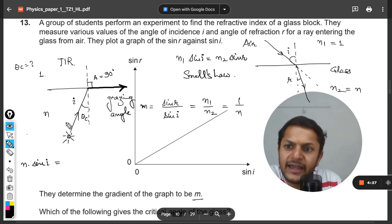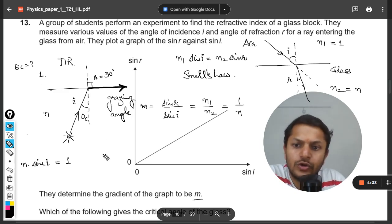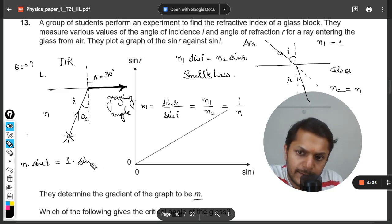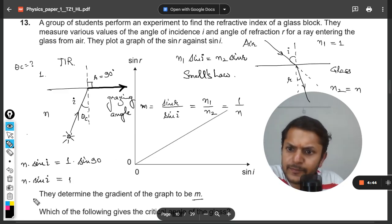...into sine i is equal to one, as the refractive index, into sine 90, which is again one. Clear. So i will be taken as theta critical, clearly.